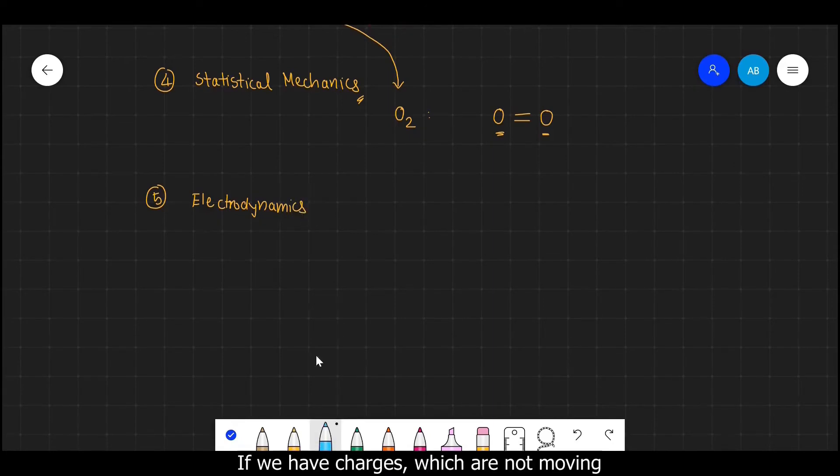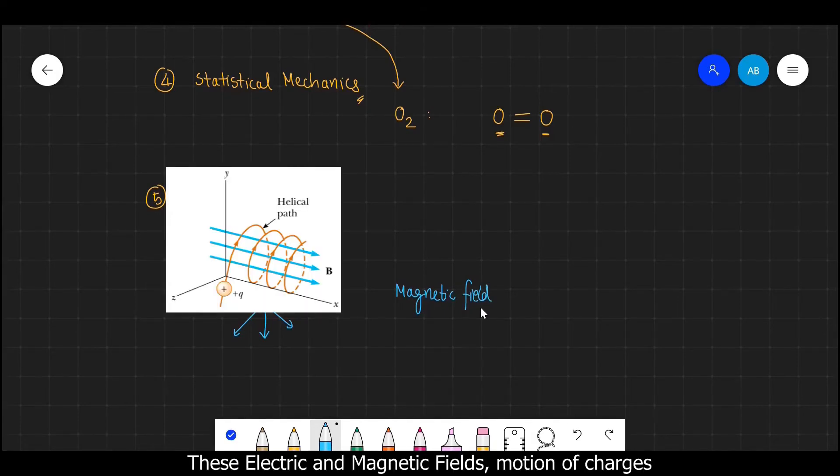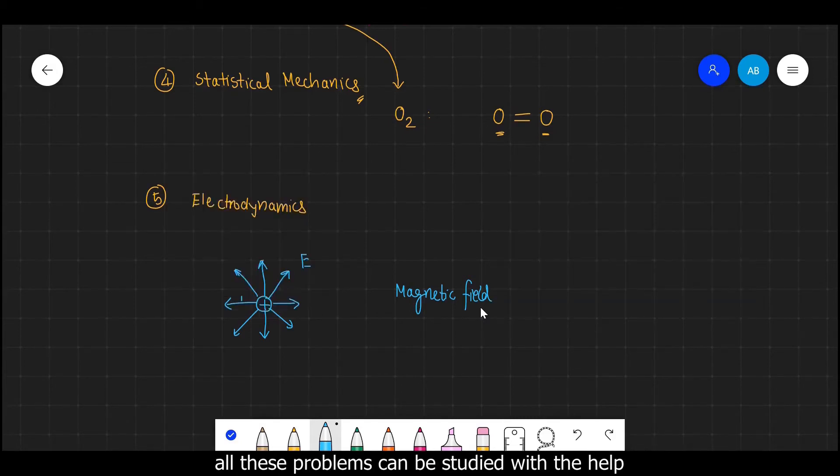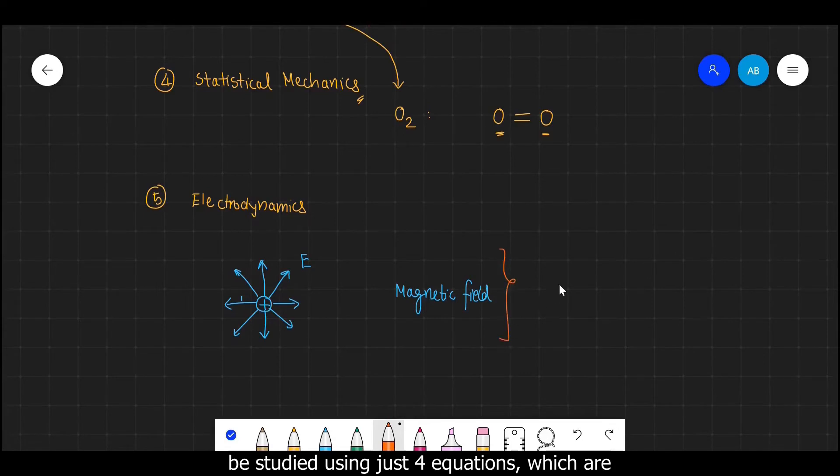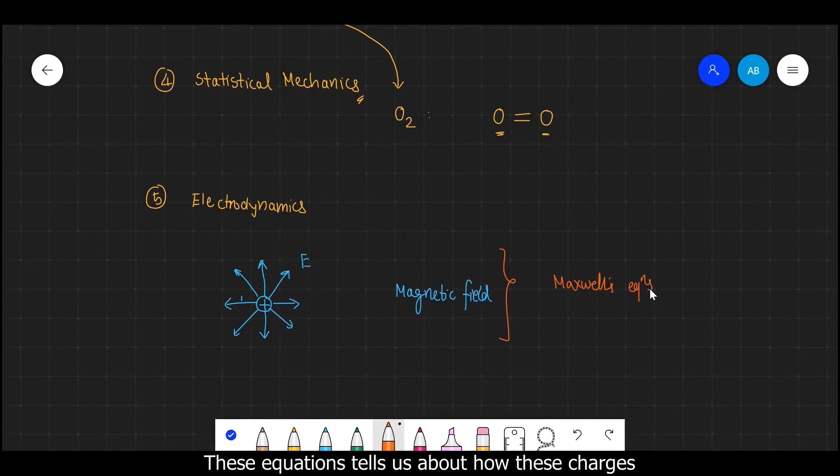So if we have charges which are not moving, for example if I take this positive charge, it is not moving, then it will produce an electric field around it. But when this charge starts moving, along with the electric field they also produce magnetic field. This electric and magnetic fields, the motion of charges in this field, and also the behavior of photons, all these problems can be studied with the help of electrodynamics. And the best thing is that this whole branch can be studied through just four equations which are known as Maxwell's equation.